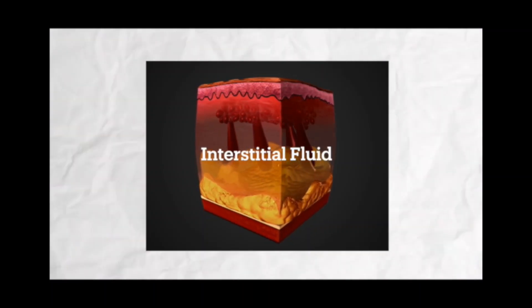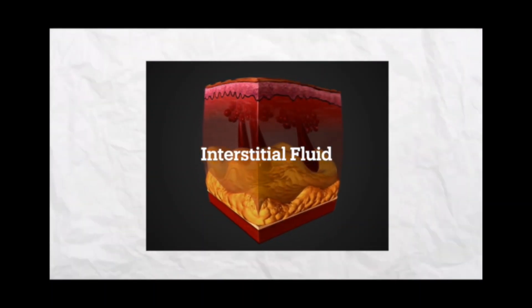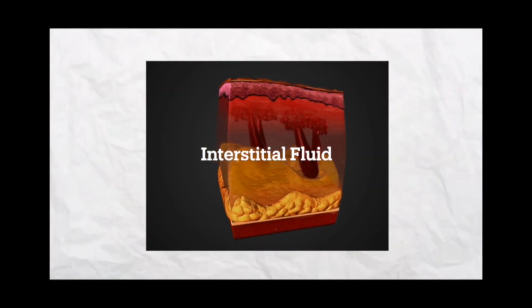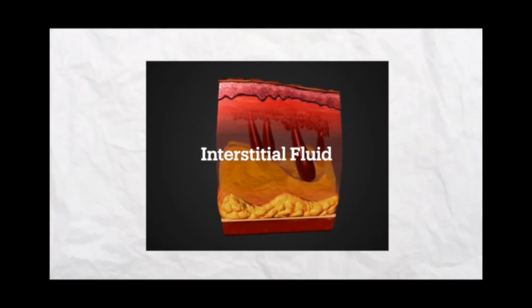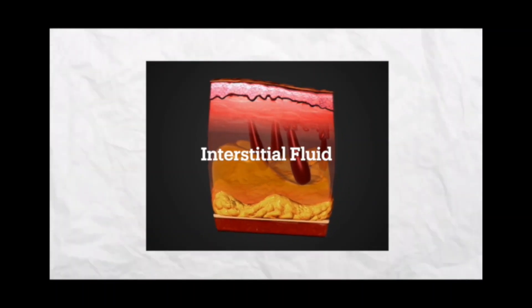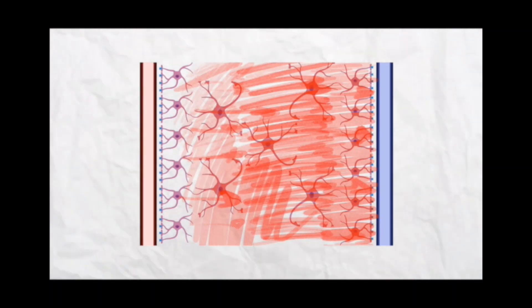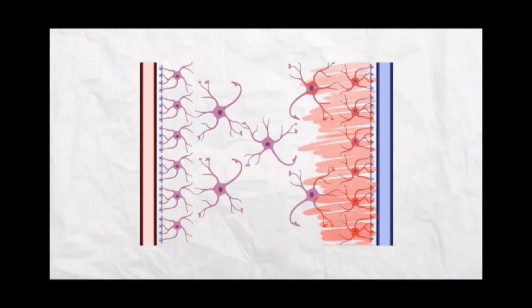Interstitial fluid is simply fluid found in the spaces around cells and comes from substances that leak from blood capillaries. Once CSF and ISF blend with each other, they pick up any toxic substances and reroute them down through the CSF drainage system, which goes into the lymphatic circulation.